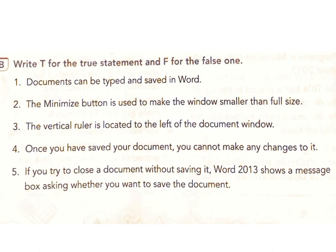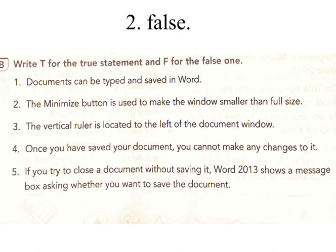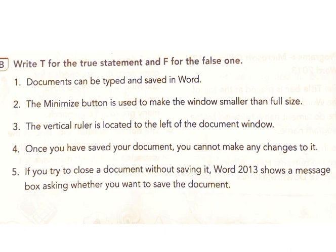B: Write T for the true statement and F for the false one. One: documents can be typed and saved in Word. Answer: true. Two: the minimize button is used to make the window smaller than full size. Answer: false. Three: the vertical ruler is located to the left of the document window. Answer: true.